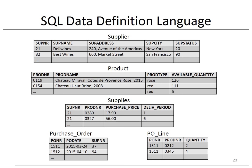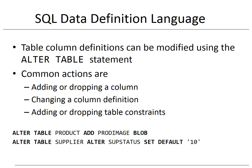Once we have finalized the data definitions, we can compile them so that they can be stored in the data catalog of the RDBMS. The next step is then to start populating the database. Here you can see some examples of tuples listed for the various tables we defined earlier. Let's assume we build a relational database for a wine purchase administration, whereby the products represent wines. The ALTER statement can be used to modify table column definitions. Common actions are adding or dropping a column, changing a column definition, or adding or dropping table constraints. The first example adds the 'prod_image' column to the product table and defines it as a BLOB. The second example assigns a default value of 10 to the 'substatus' column.